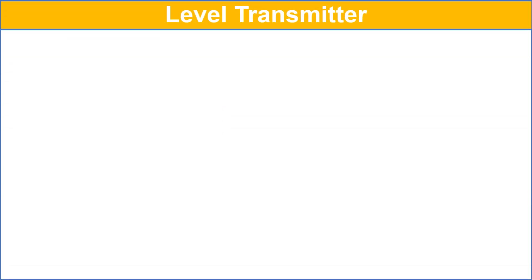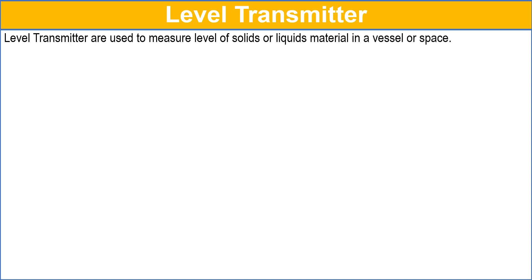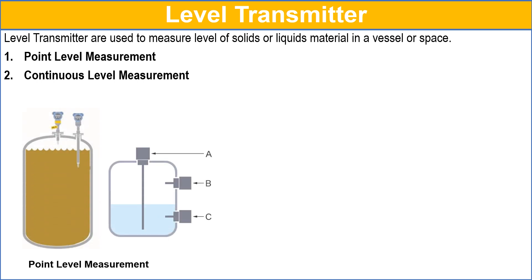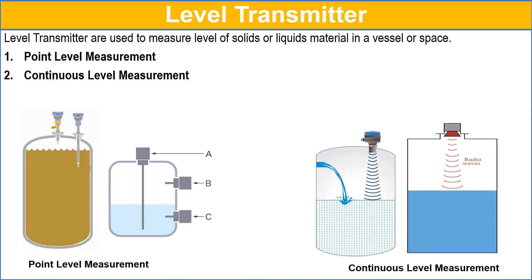Level transmitters are used to measure the levels of solids and liquid material in a vessel or space. They can be categorized as point level measurement and continuous level measurement. In point level measurement, a point level switch detects if a certain predefined level is reached. In continuous level measurement, the level of material is continuously measured as it falls or rises.